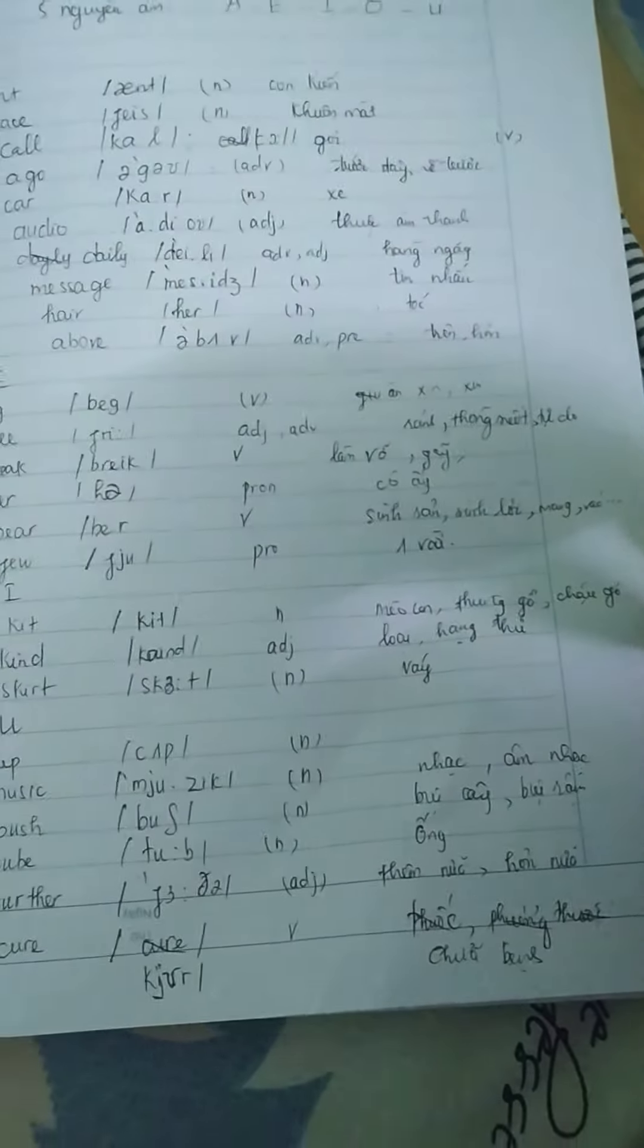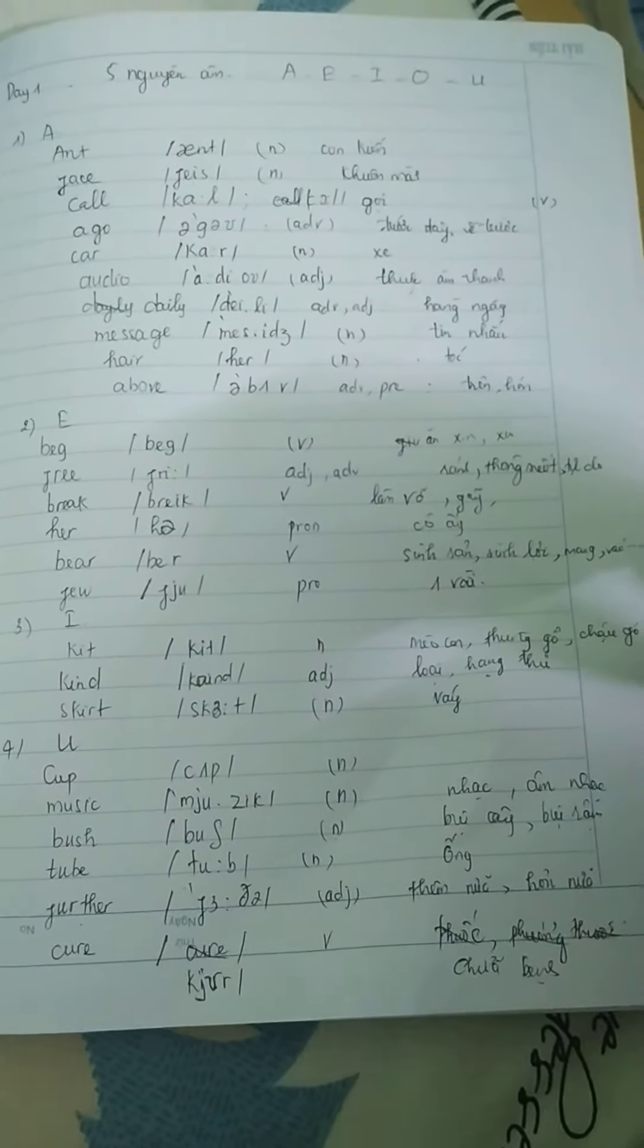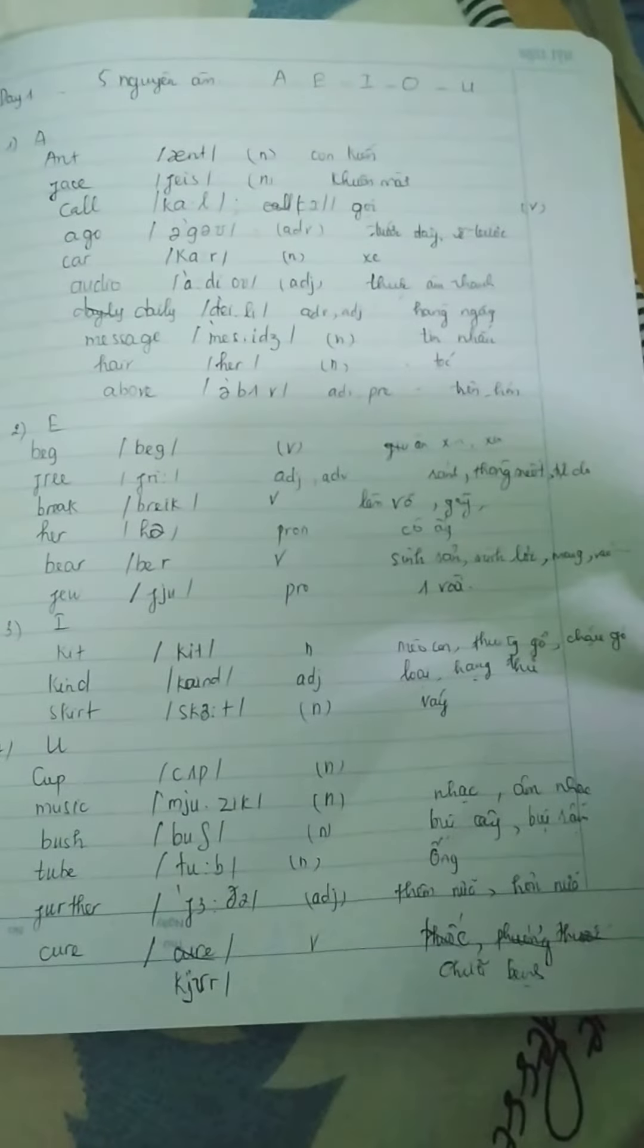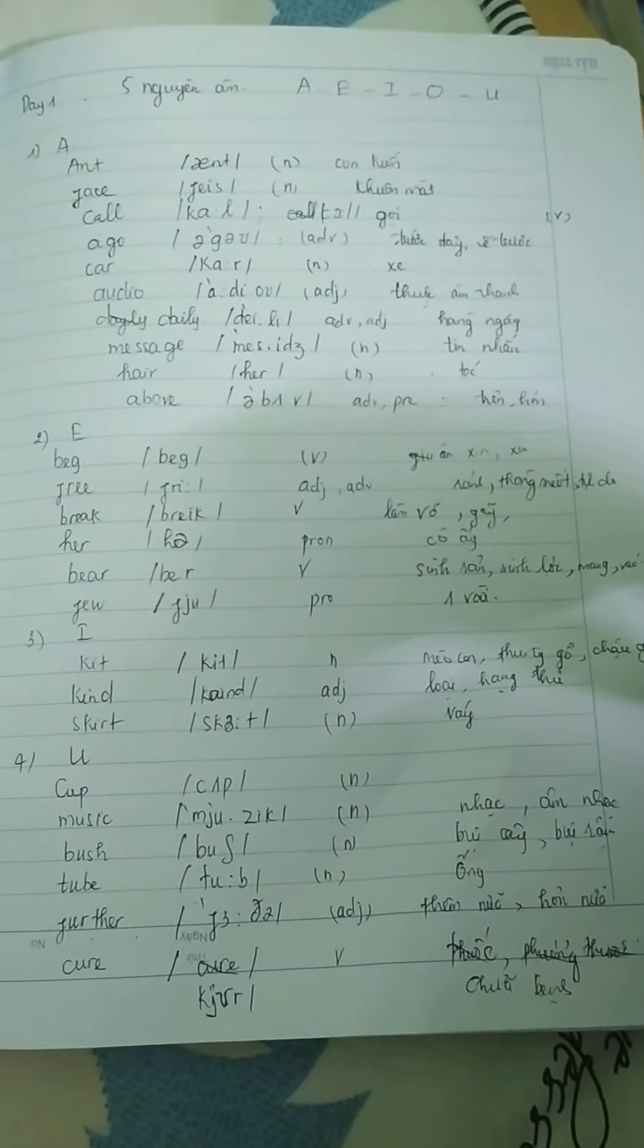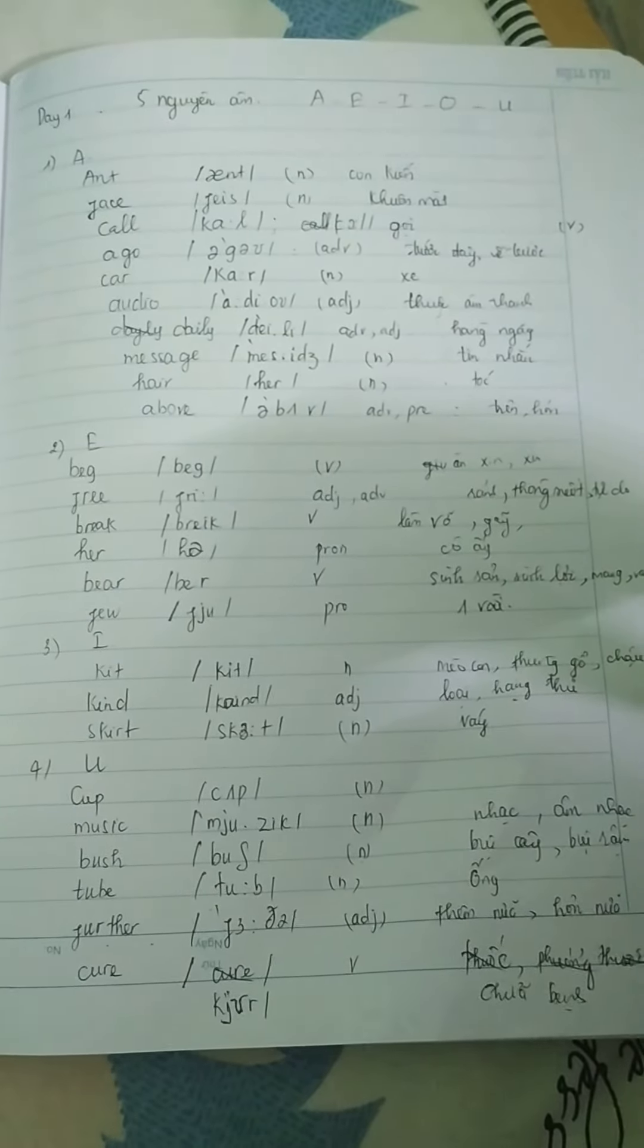Thêm nữa, hơn nữa. Ống, bụi cây, bụi rậm, nhạc, âm nhạc. Cắp bà cốc, chén. Skirt, váy. Loại hạng, hạng thương. Kite, mèo con, kit.